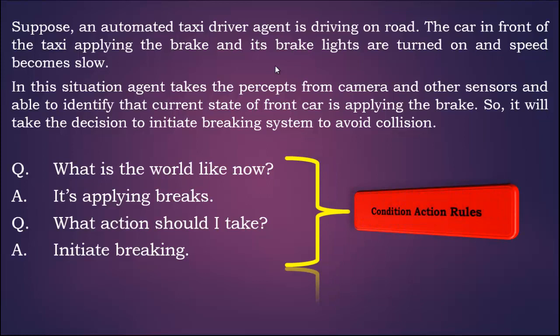The agent is taking inputs and going for action as follows. What is the world like now? From the current states it can reveal that the car in front is applying the brakes. Then the agent applies the Condition-Action Rule: what action should I take? The action would be to initiate braking.